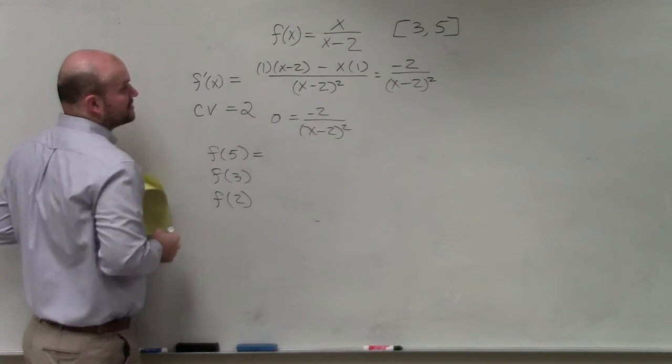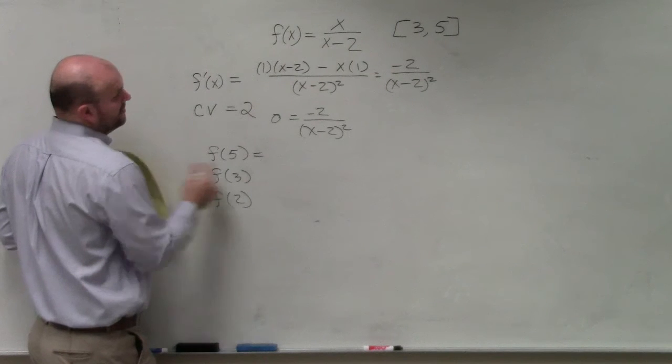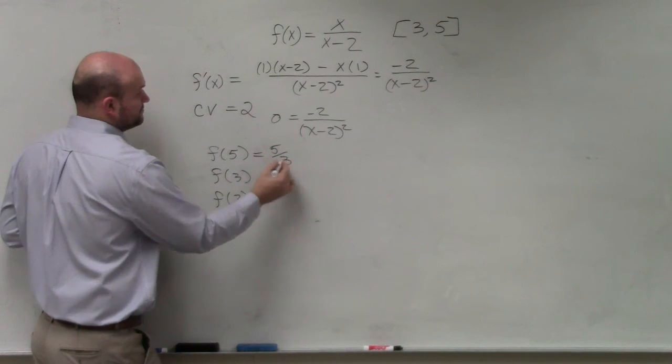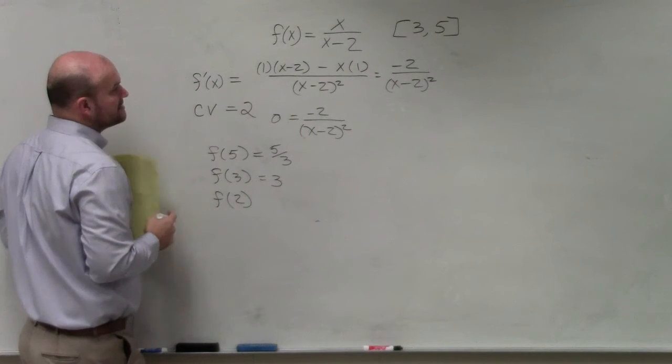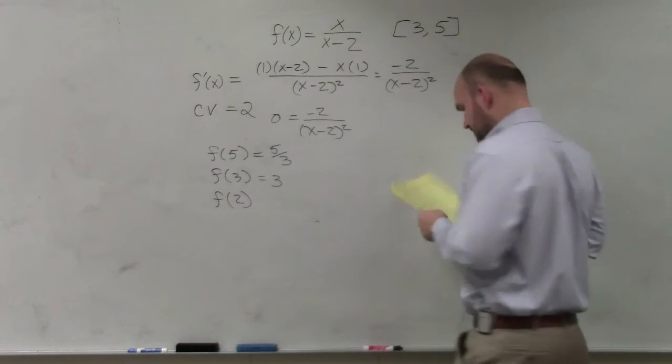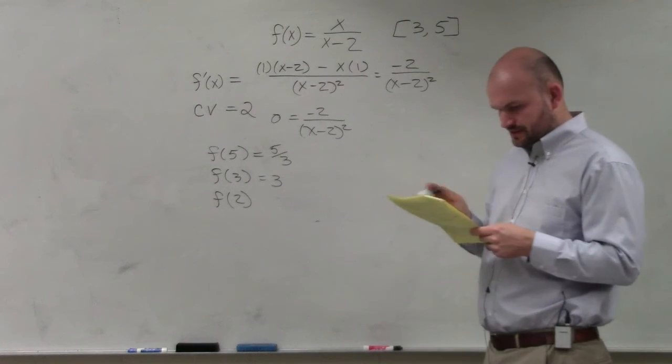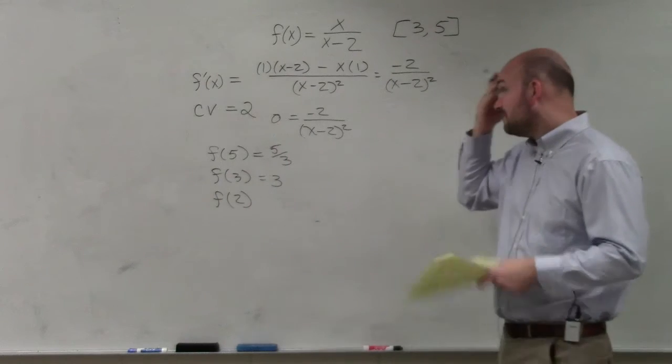So now we just go back to our original function, and we end up getting here, let's see, 5, that becomes 5 thirds over 3, you're going to equal to 3. And going back into 2, what did I have in there? So is that 2? Oh, I'm sorry, well, idiot.